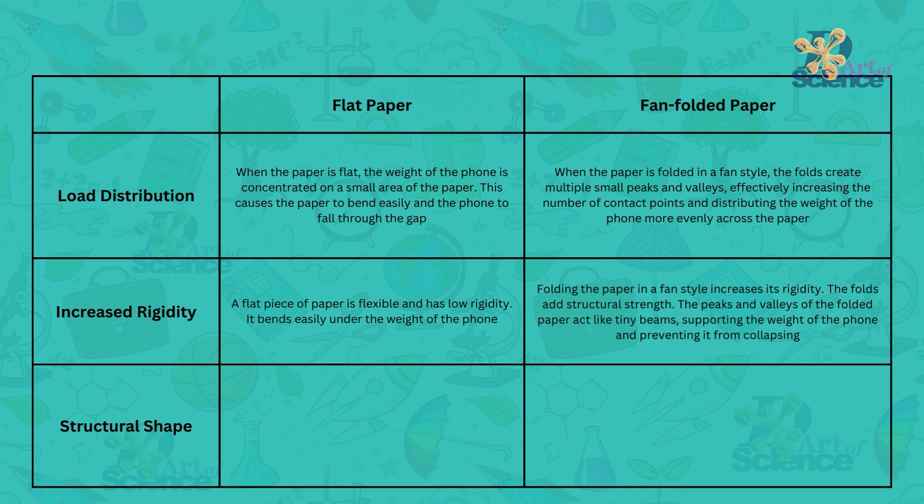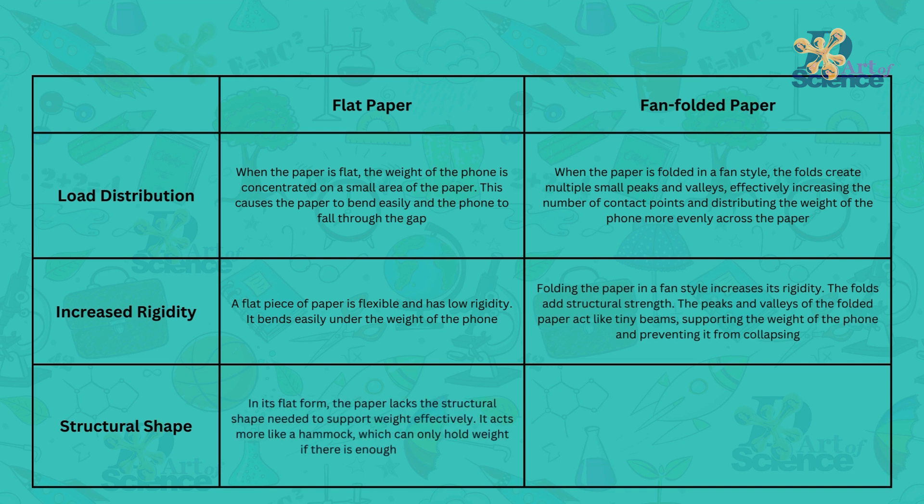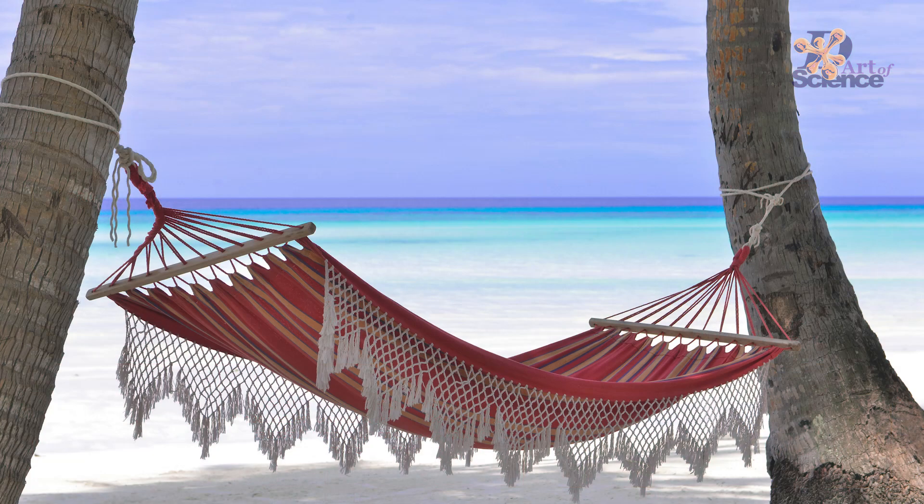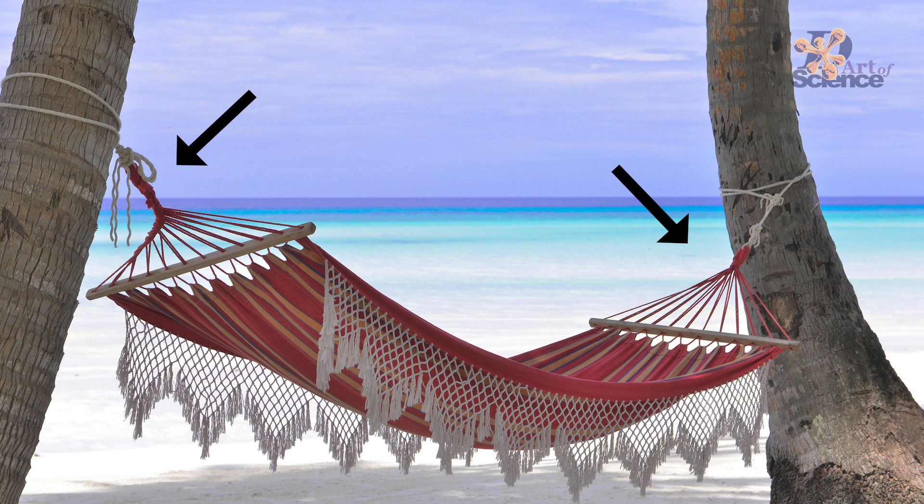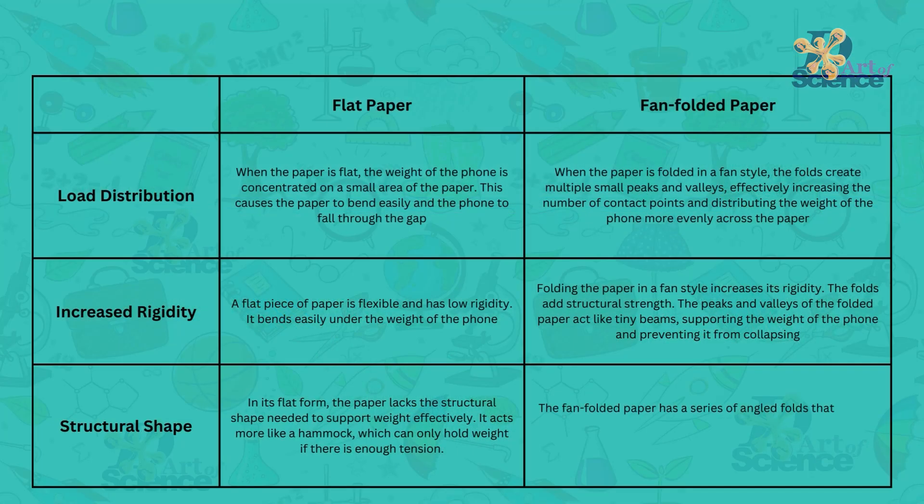Finally, structural shape. In its flat form, the paper lacks the structural shape needed to support the weight effectively. It acts more like a hammock, which can only hold weight if there is enough tension. The fan folded paper has a series of angled folds that provide an internal structure. These angles resist deformation, allowing the paper to hold more weight without collapsing.